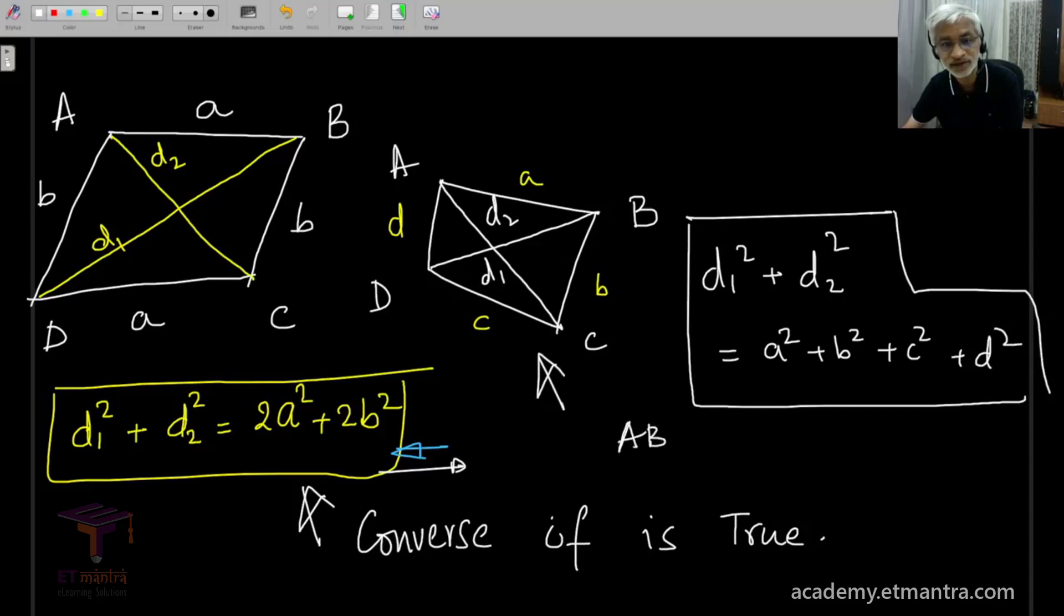then we can conclude that this quadrilateral, that is A, B, C, D, is a parallelogram. So I am going to return to this, but for now please do remember that this could be a useful algebraic relationship.